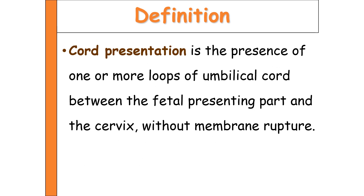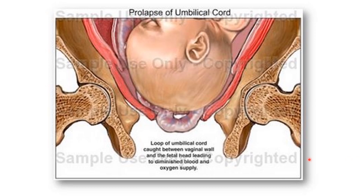Cord presentation means the presence of one or more loops of umbilical cord between the presenting part and the cervix without membrane rupture. Here the membranes are intact and the umbilical cord is lying in front of the presenting part. In this picture, if the membranes are ruptured it is cord prolapse; if the fetal membranes are intact, that is cord presentation.